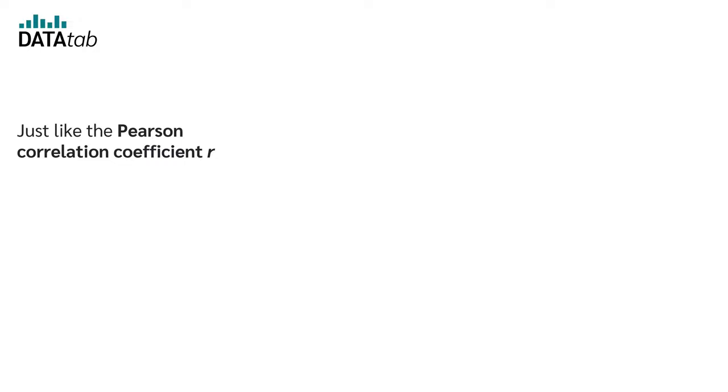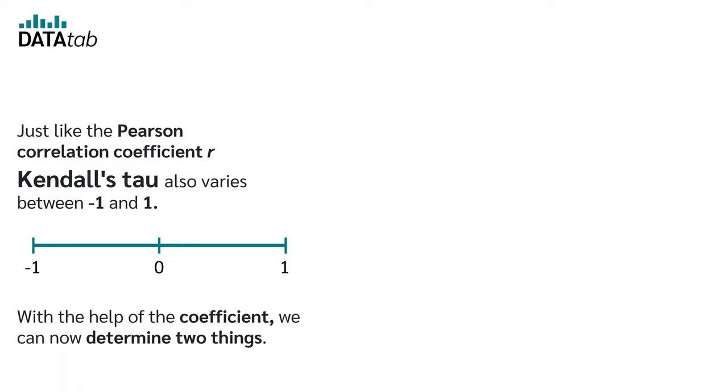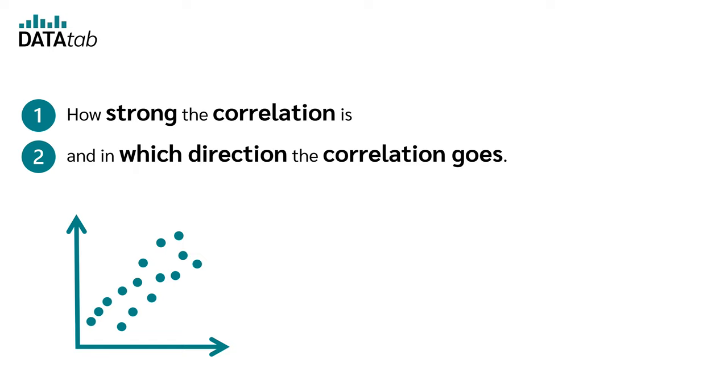Just like the Pearson correlation coefficient R, Kendall's Tau also varies between minus one and one. With the help of the coefficient, we can now determine two things. Number one, how strong the correlation is. And number two, in which direction the correlation goes.